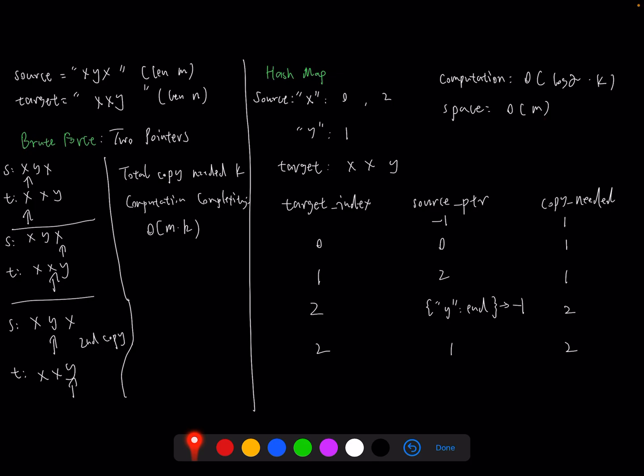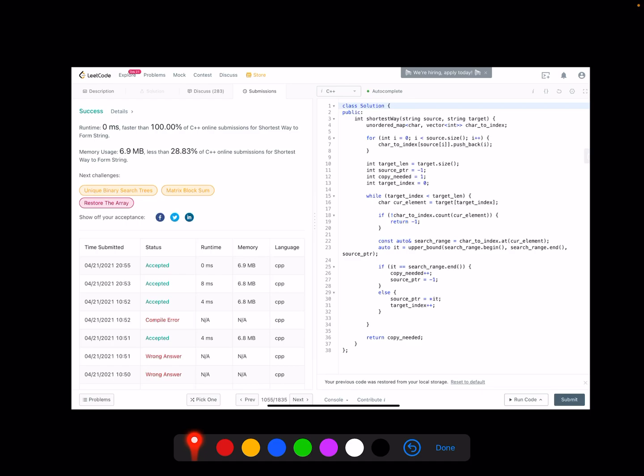All right, let's look at how we implement this algorithm. So first we create a hash map. We iterate the whole source string. So it takes big O of M to build the hash map. Next we reset our source pointer, reset copy needed, and also reset our target pointer as well. So then we come into a while loop.